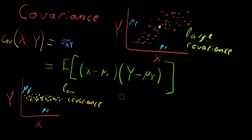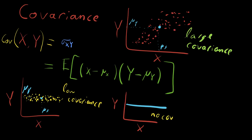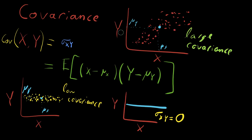In the extreme case, where the data lies in a horizontal line — x can have a lot of variance but y has none whatsoever — the covariance of x and y equals zero. Because x can change and do whatever it wants, but y will always be at its mean, a single value, and thus this term will always be zero. This is the idea of covariance: how one random variable varies in relation to another.